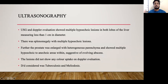The patient underwent USG and Doppler evaluation, which showed multiple hypoechoic lesions in both lobes of the liver, less than one centimeter in diameter. There was splenomegaly with multiple hypoechoic lesions. The prostate was enlarged with heterogeneous parenchyma and showed multiple hypoechoic to anechoic areas, suggesting an evolving abscess. The lesions did not show any color uptake on color Doppler, and tuberculosis and melioidosis were suspected.